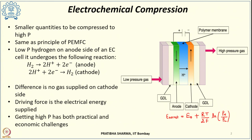The discharge pressure or maximum achievable pressure depends upon the applied voltage. As the applied voltage increases, the high pressure at which protons recombine on the cathode side also increases. We can achieve pressures of around 25 to 30 MPa at a current density ranging from 0.1 to 1 ampere per centimeter square, and the life of such compressors can be higher than 20,000 hours.